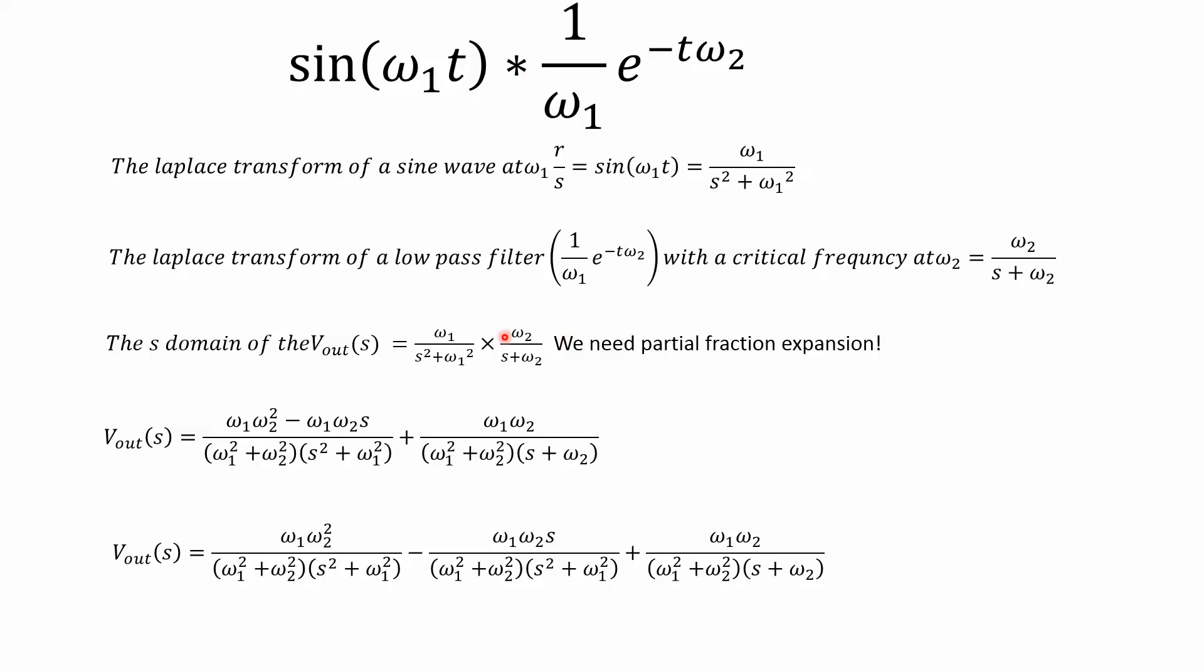Convolution in the time domain, multiplication in the frequency domain. We do need partial fraction expansion, and this turned out to be a lot more work than I had expected. But with the help of Wolfram Alpha and SymPy, I was able to come up with this, where we have the critical frequency squared plus the frequency we're at squared. Then you can see this constant of ω₁, ω₂² - ω₁, ω₂s.